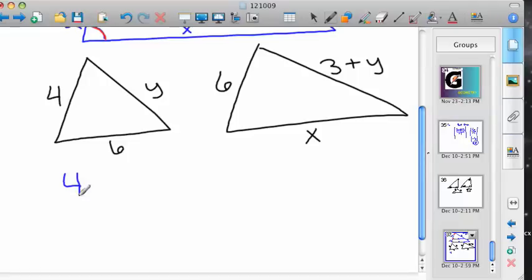So as you set this up, 4 to 6 is going to be equal to 6 to x. Just cross multiply and divide.